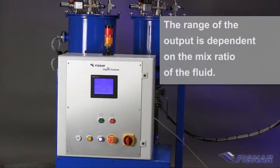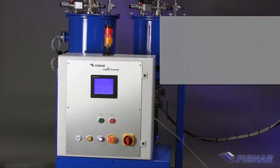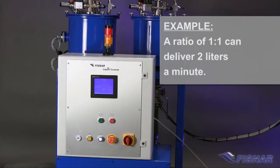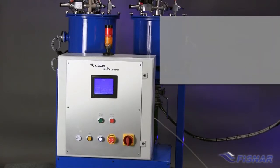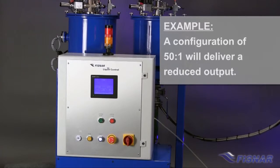The adjustment in range of the output is dependent upon the mix ratio of the fluid to be dispensed. As an example, a ratio of 1 to 1 can deliver 2 liters a minute, but a configuration of 50 to 1, which is the maximum ratio that the machine can accommodate, will deliver a reduced output.